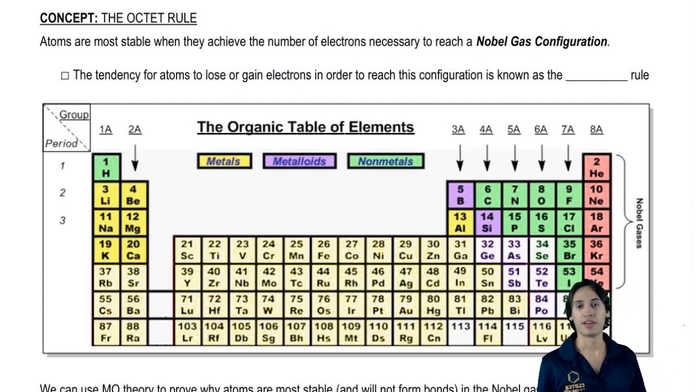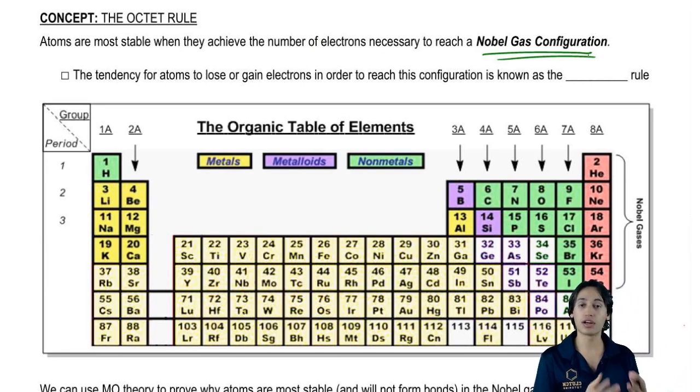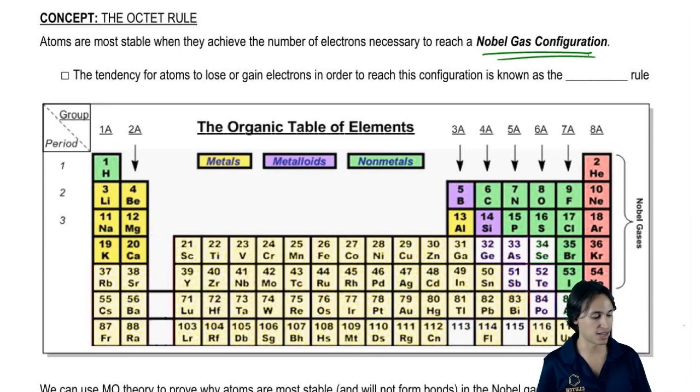The octet rule is based on the idea that all atoms on the periodic table eventually want to reach what's called the noble gas configuration. The noble gas configuration just means that they look like noble gases in terms of the amount of electrons that they have.